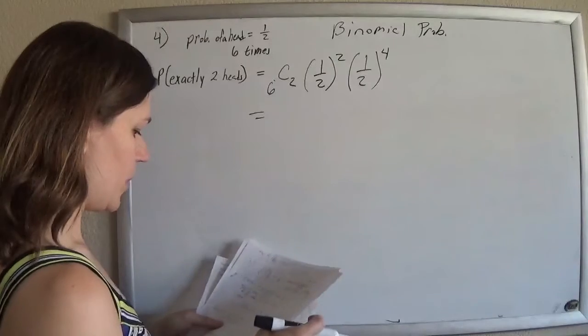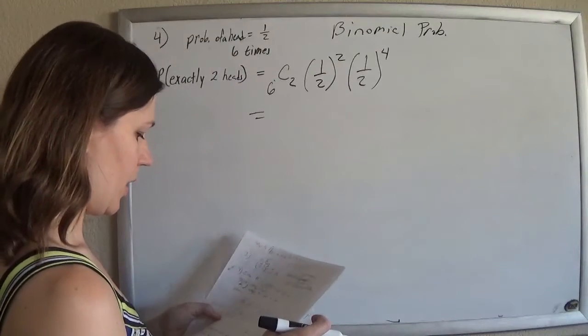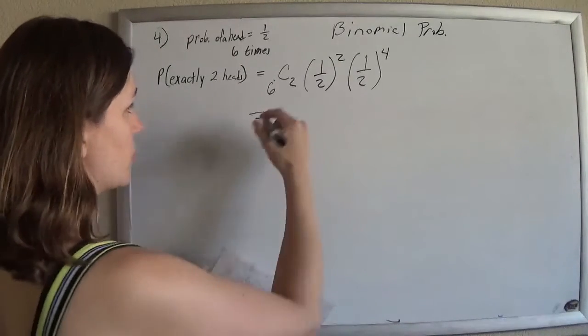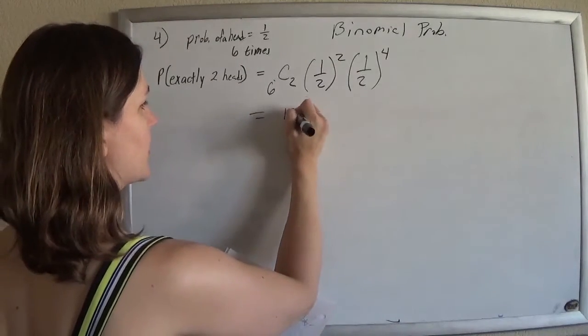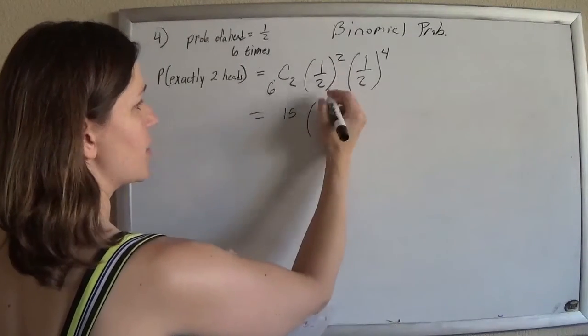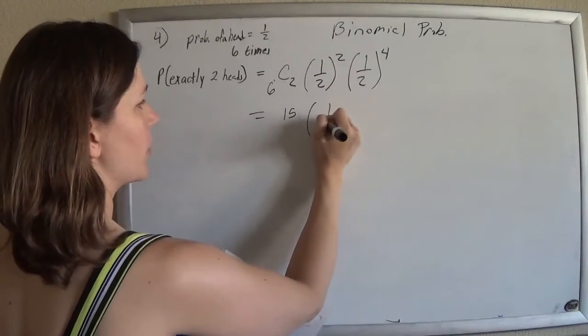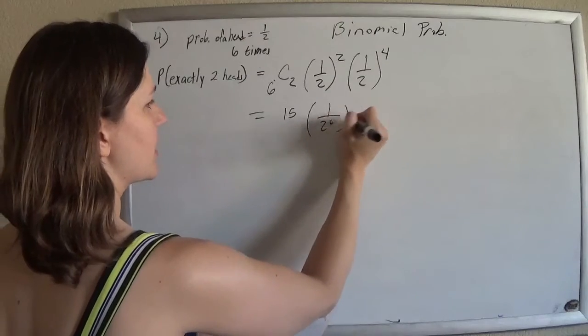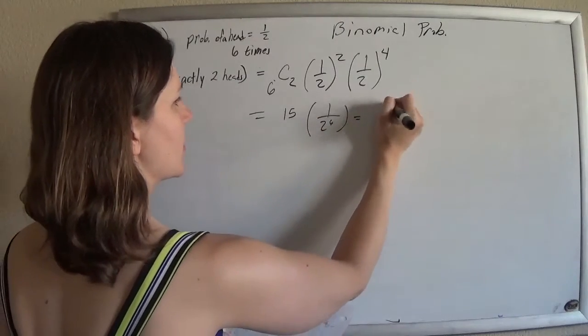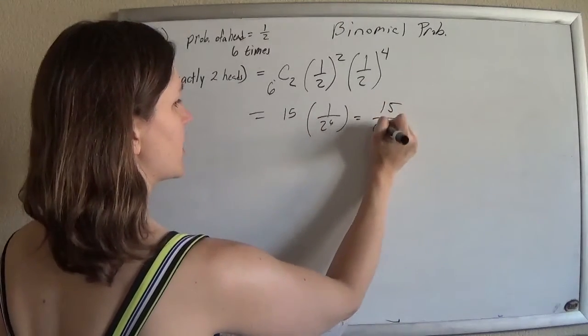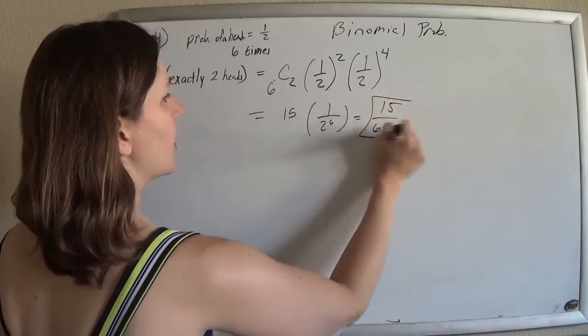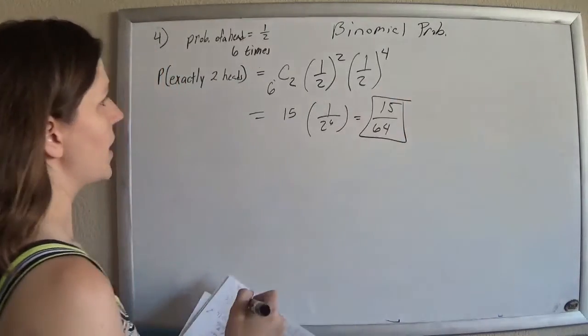So this is going to be: 6 choose 2, which is fifteen, and this will be one over two to the sixth — so it's fifteen out of sixty-four, and that's your answer.